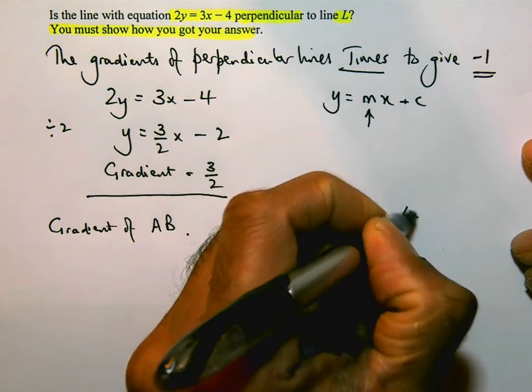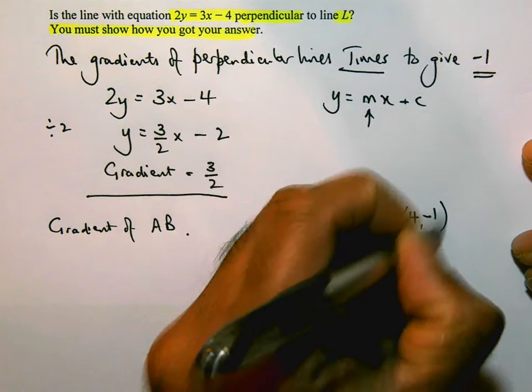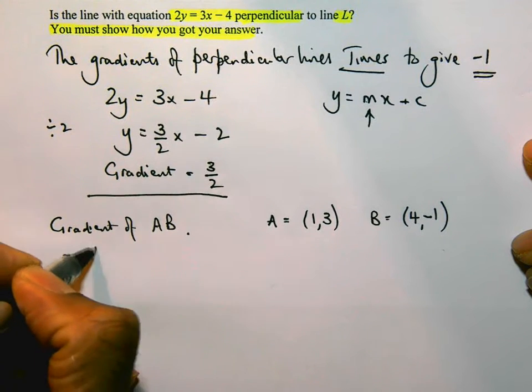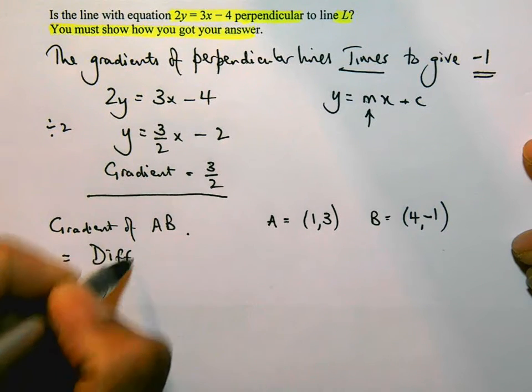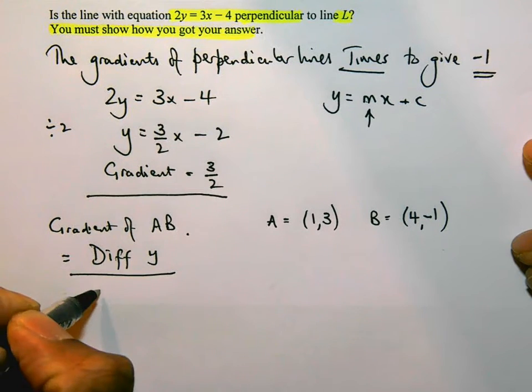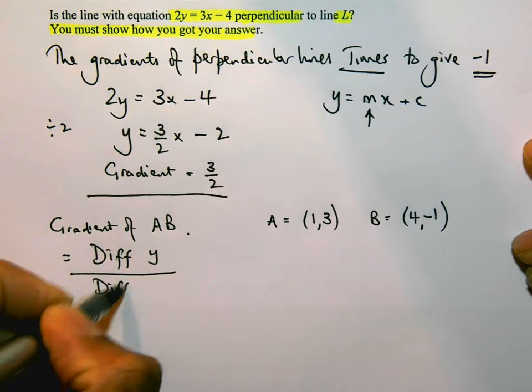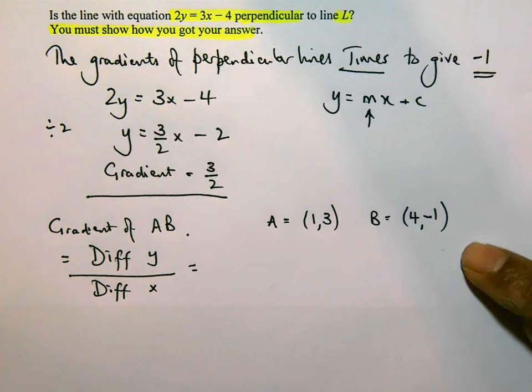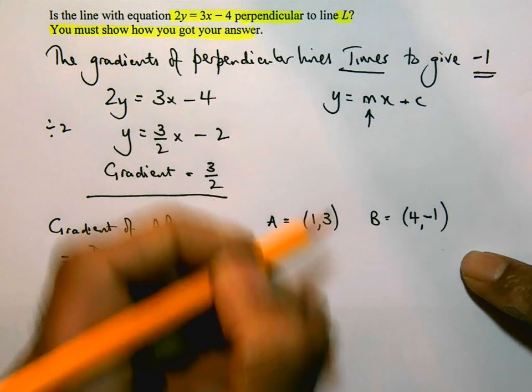So the gradient of a line through two points, there's a rule for that: the difference in the y values over the difference in the x's. So if I look at these two coordinates, it's useful to label x's and y's. So x coordinate, y coordinate, x and y.